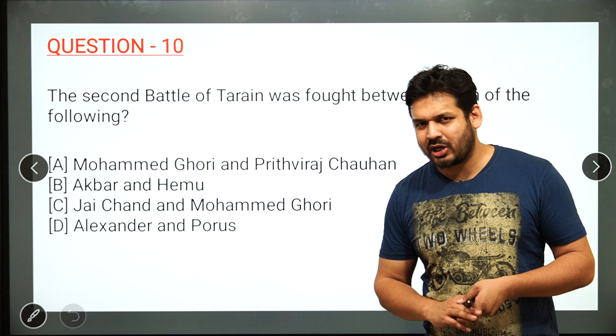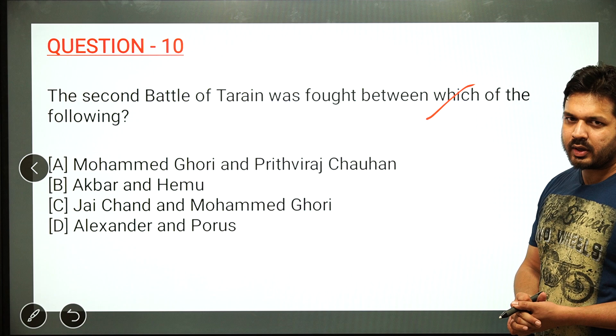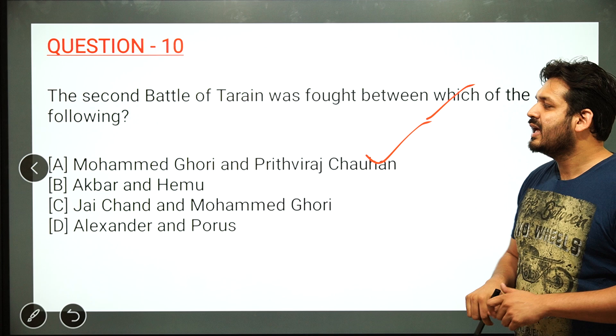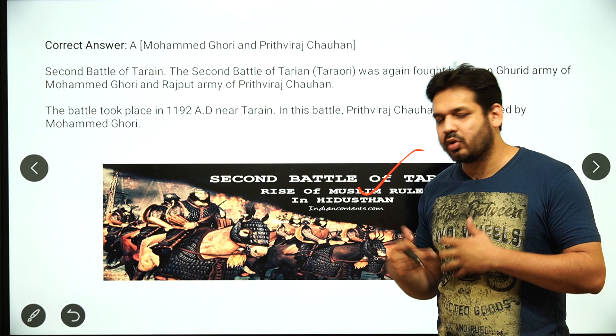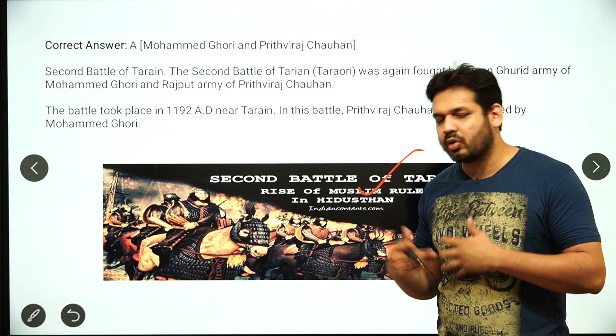The last question is about the Second Battle of Tarain, fought in 1192 AD. The answer is A — it was fought between Muhammad Gori and Prithviraj Chauhan. Prithviraj Chauhan was defeated in this war, which in many ways led to the rise of Muslim rule in India. Muhammad Gori won this battle.